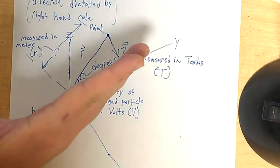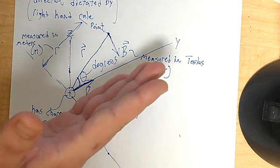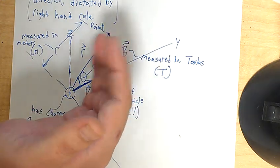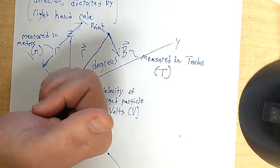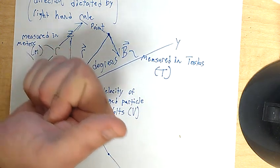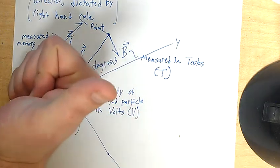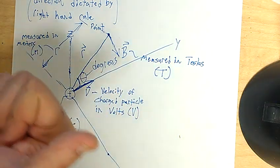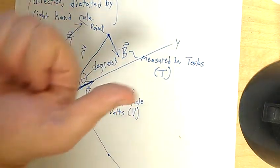And curl it. So, in line with the velocity vector, curl it towards R, R hat, your R vector. And the direction in which your thumb is pointing, that's the direction in which B is pointing.